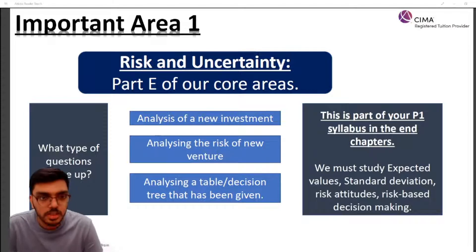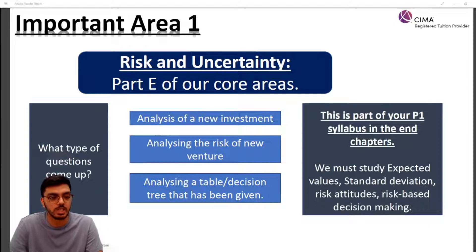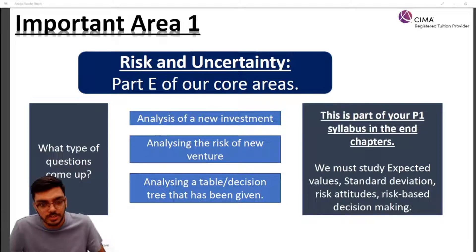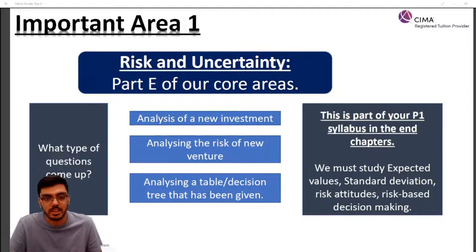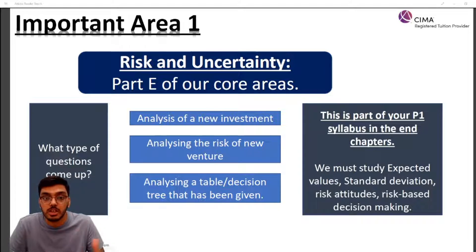The first topic is risk and uncertainty. This is part E of your core areas or blueprint areas identified by CIMA. If you don't know what the blueprints are, I'll leave a link in the description — it takes you to our blueprint explanatory video, which is a vital part of your studies.